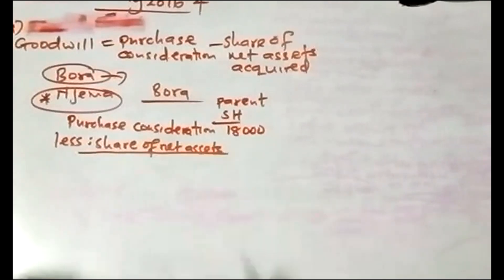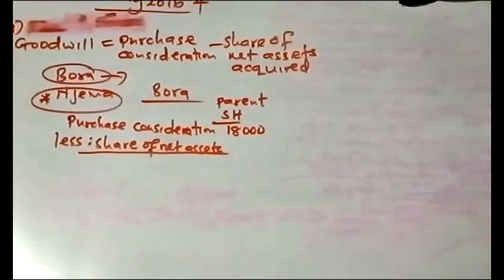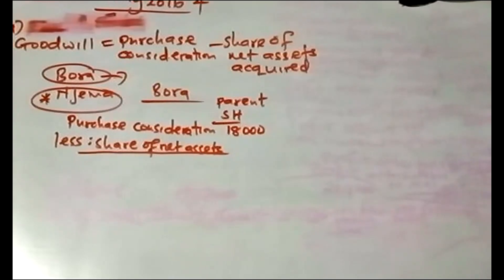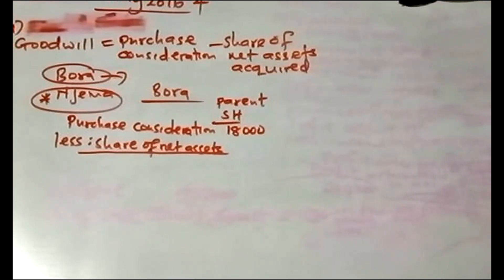For the share of net assets, we have: ordinary share capital, share premium, retained earnings, and revaluation reserve. Those are the net assets to check in any question. In this question, there was no balance sheet given. In some questions you get a balance sheet and go to the equity section; if not given, they provide net assets in additional information.